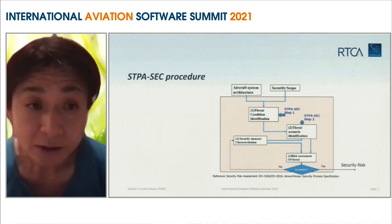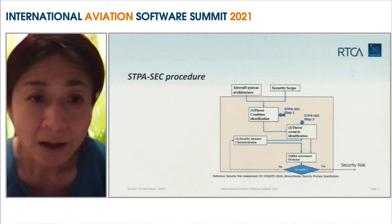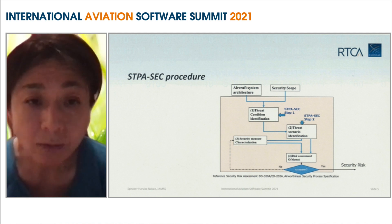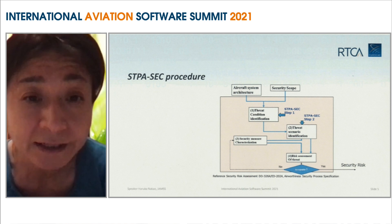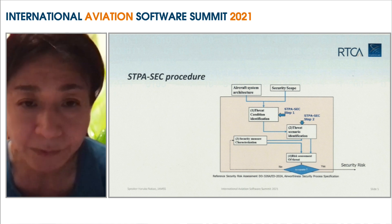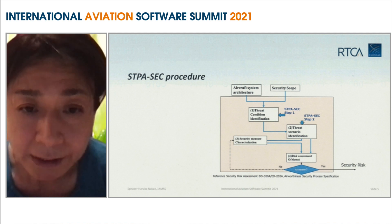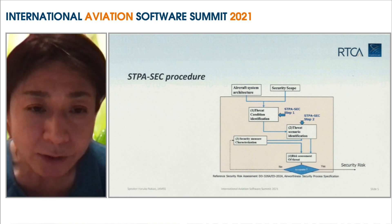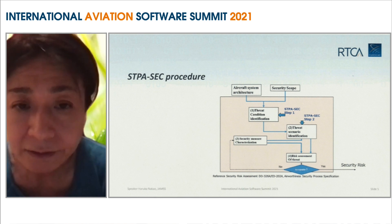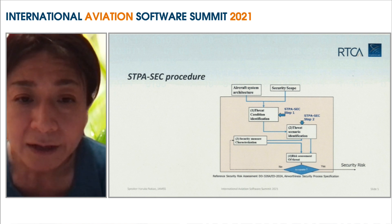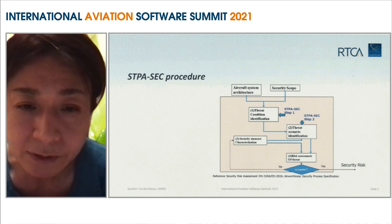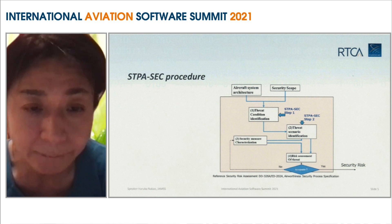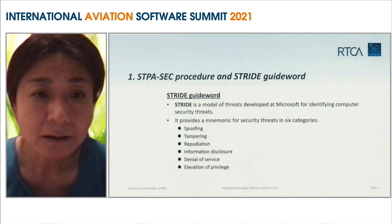This chart shows the STPA-SEC procedure. As an input, aircraft system architecture and security scope are inputted to the threat condition identification — this is the first step of STPA-SEC. The next step, step two, is threat scenario identification. Then, from the system aspect, security measure characterization is considered in the threat scenario identification. Then the risk assessment of the threat is performed. After that, whether the identified risk is acceptable or not is considered.